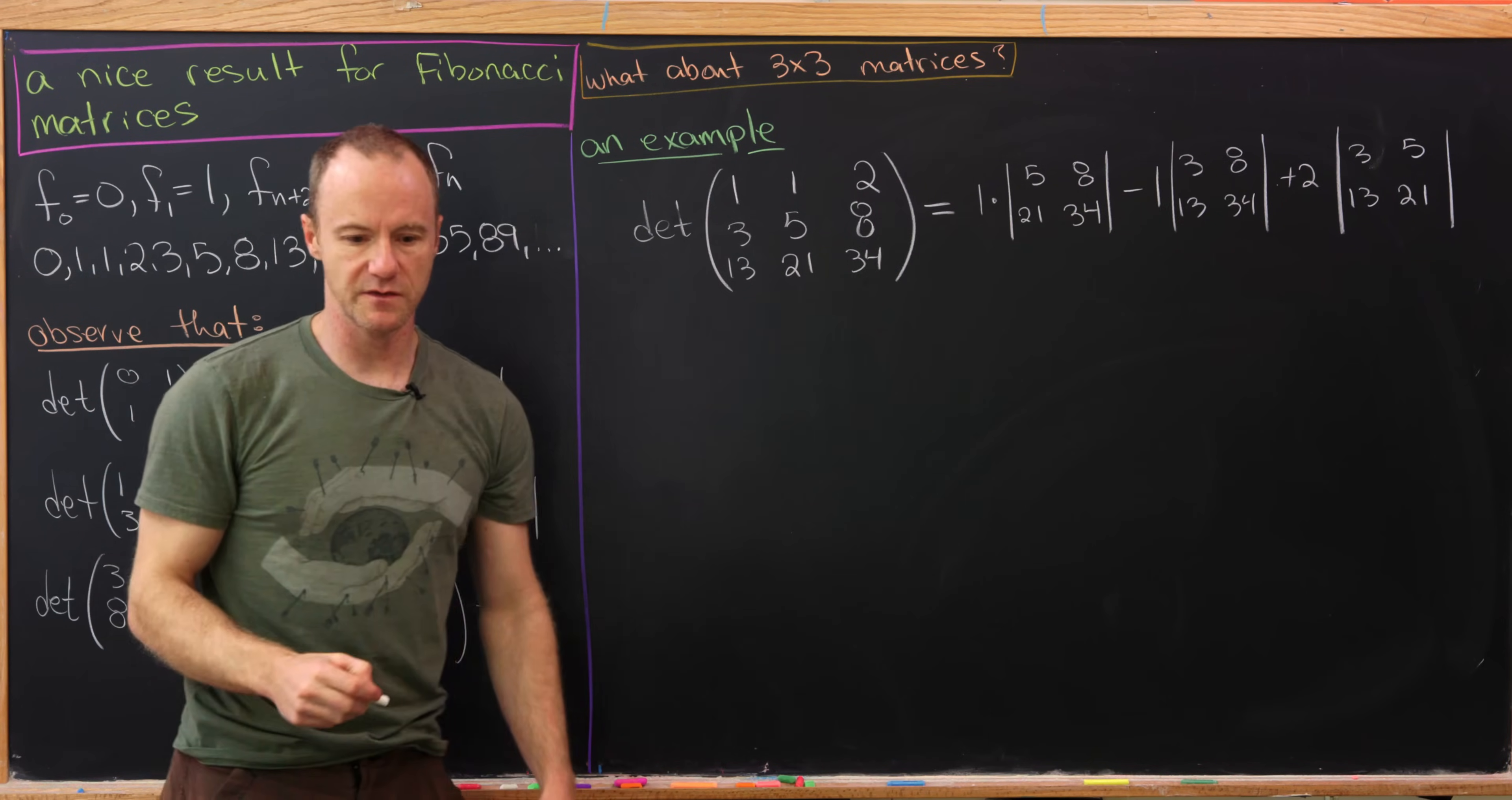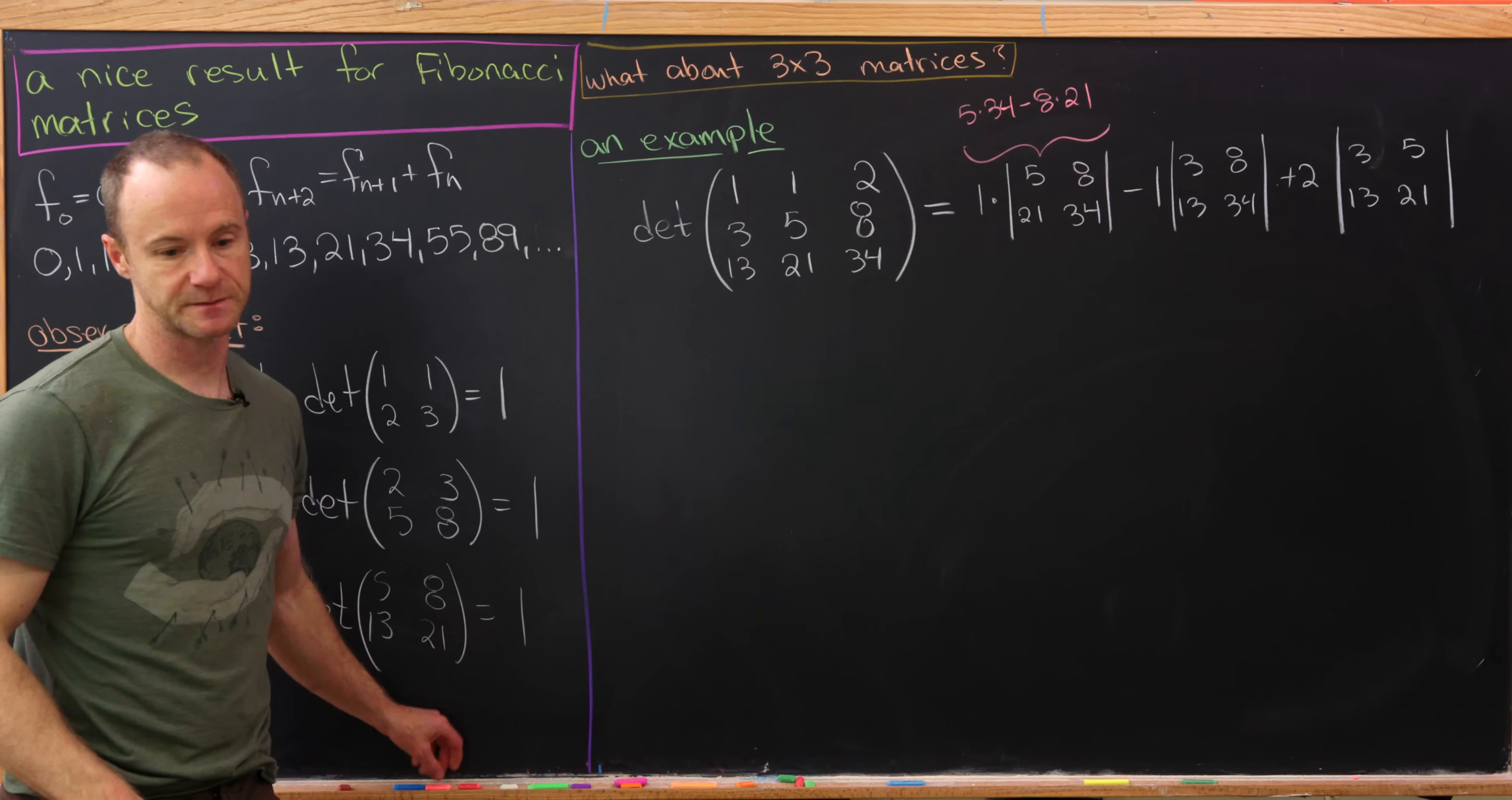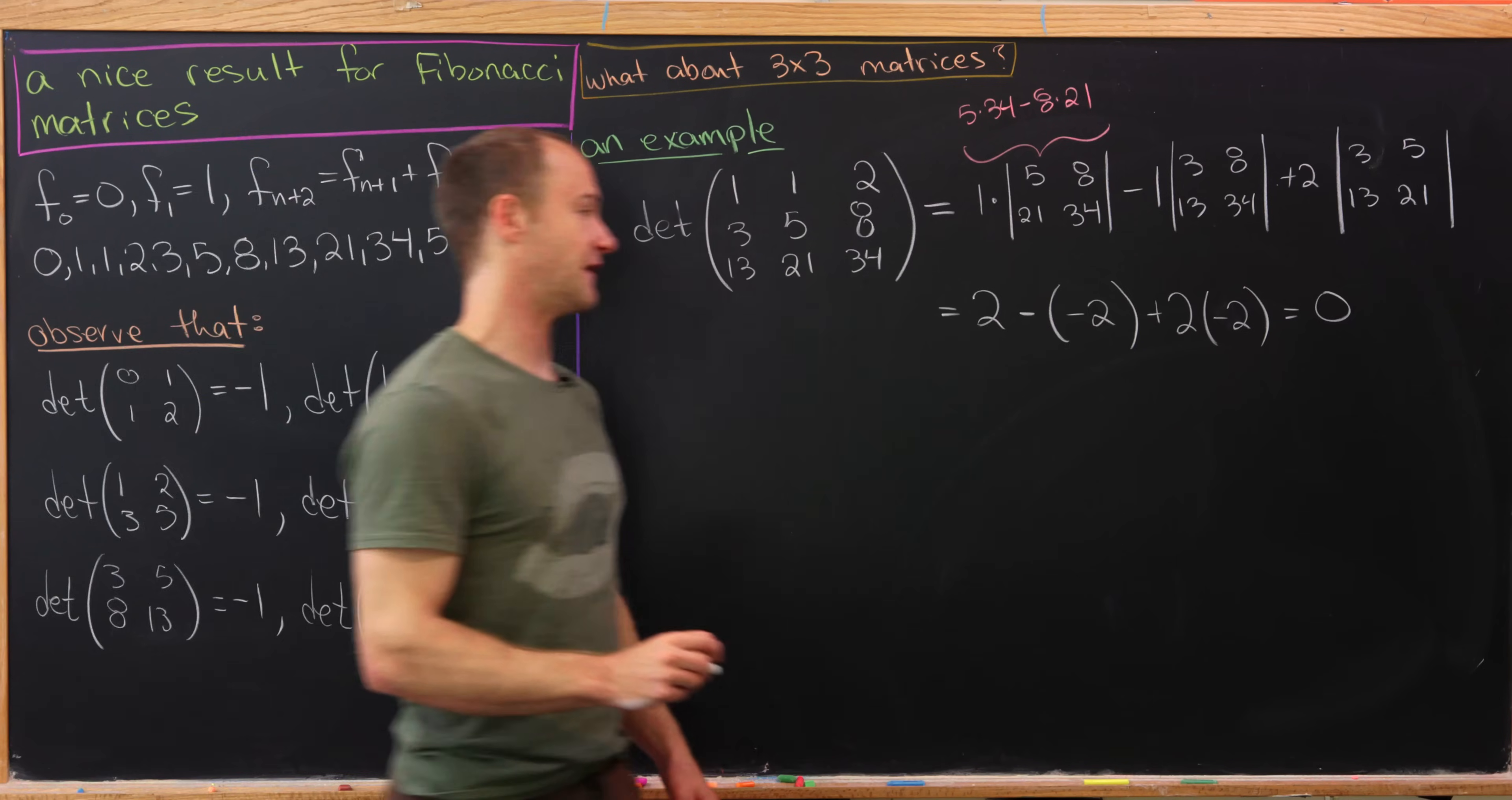And now, this is just essentially like an arithmetic exercise to find these numbers. So I'd like to maybe recall exactly how you would do that. Just the 2 by 2 determinant formula says that this will be 5 times 34 minus 8 times 21, and so on and so forth for those others. So doing that calculation, we'll see that we get 2 for this first minus a negative 2. That's the determinant of this second matrix. And then plus 2 times negative 2. But then obviously, if you were to do that sum, you would get 0. So that's what we have in the end.